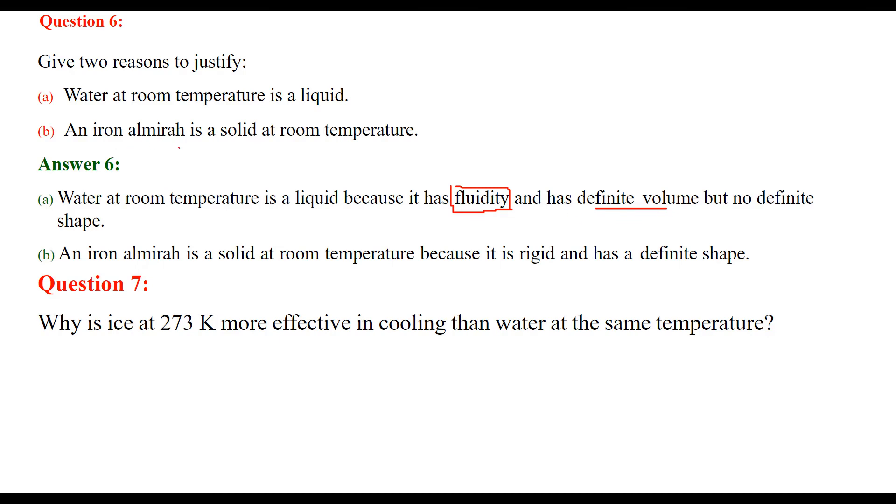(b) An iron almirah is a solid at room temperature because it is rigid and has a definite shape.